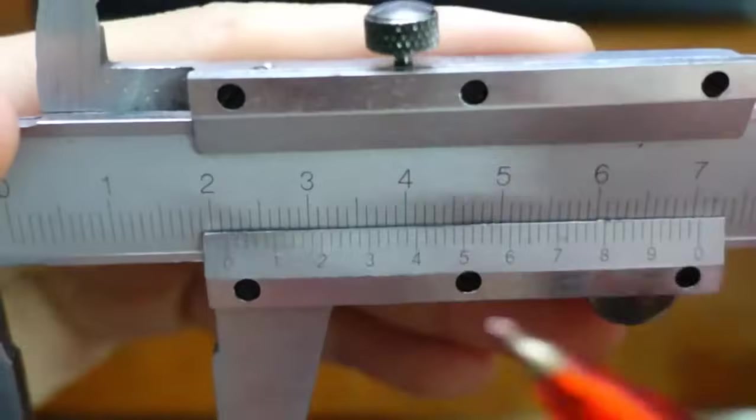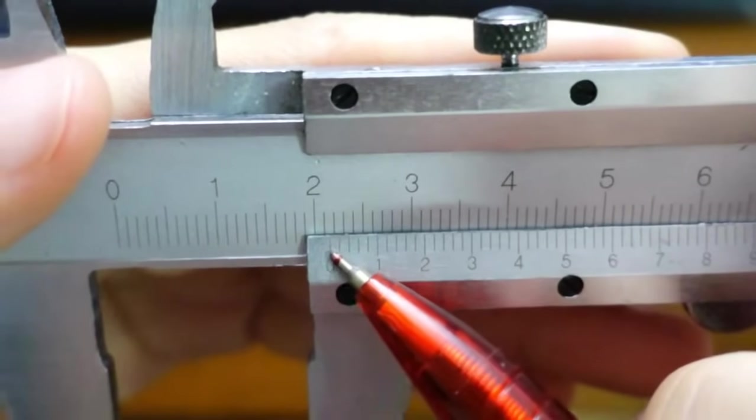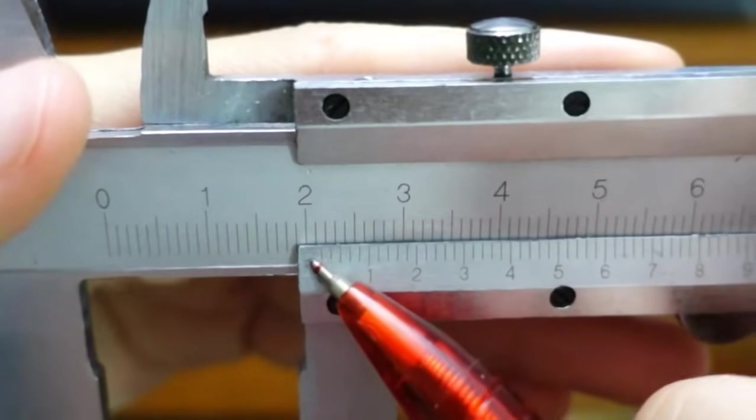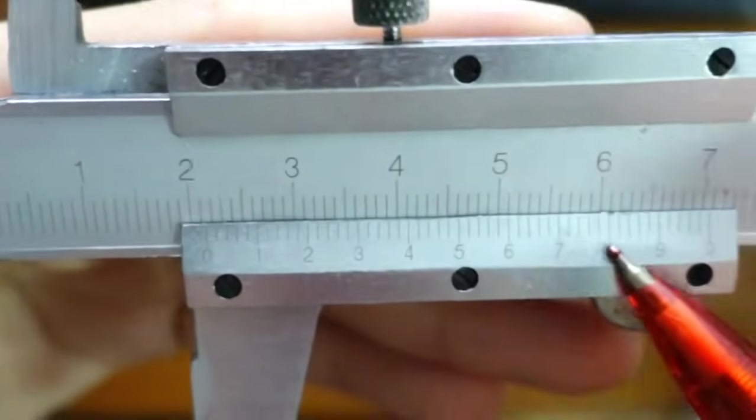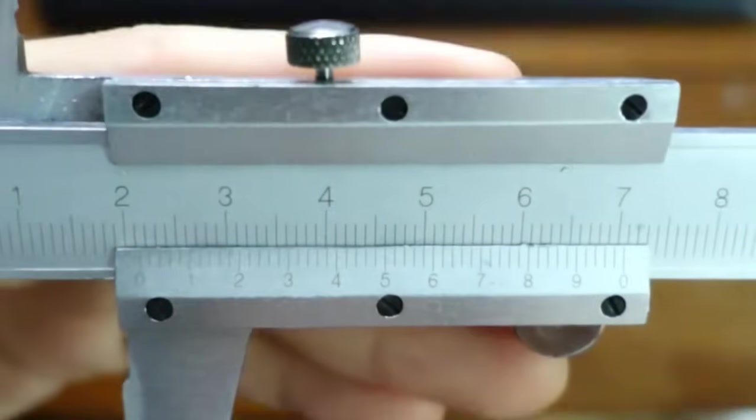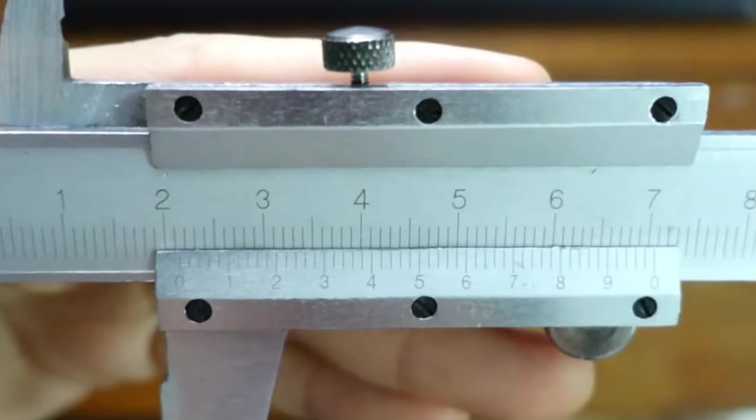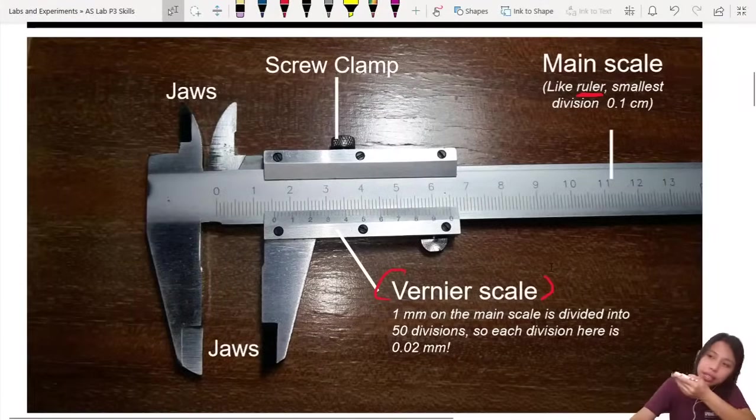So 50 divisions is all this. So what is one of this thing? One millimeter is this whole thing. From zero to zero. So one tiny division here is 0.02 millimeter. Like what we talk at here, right?